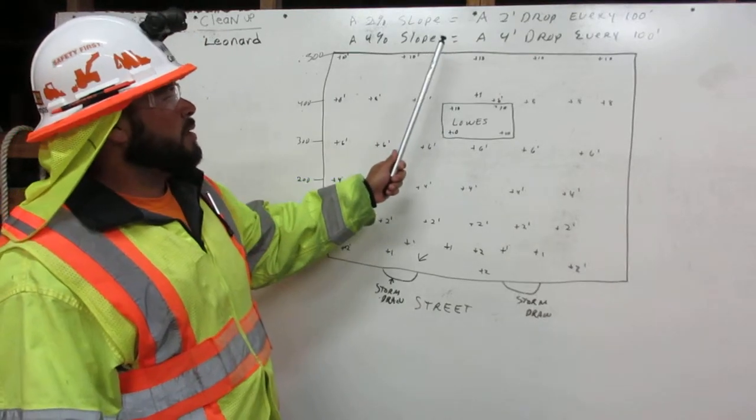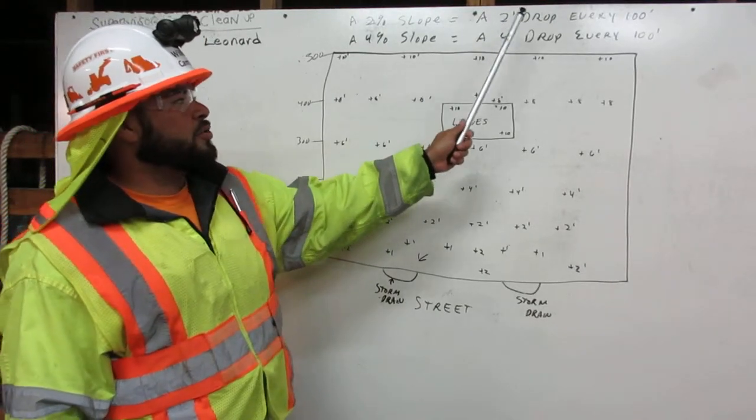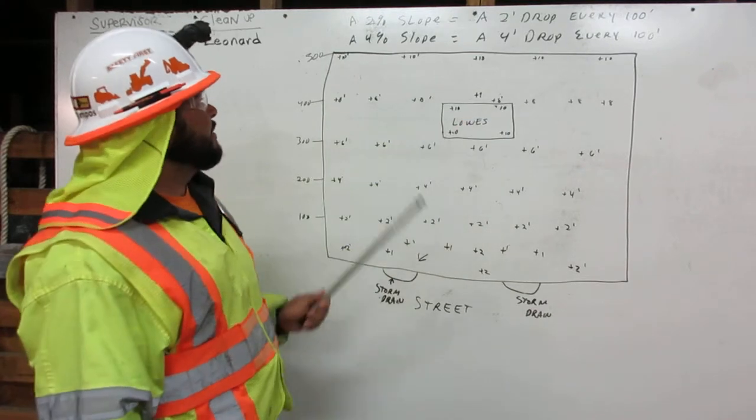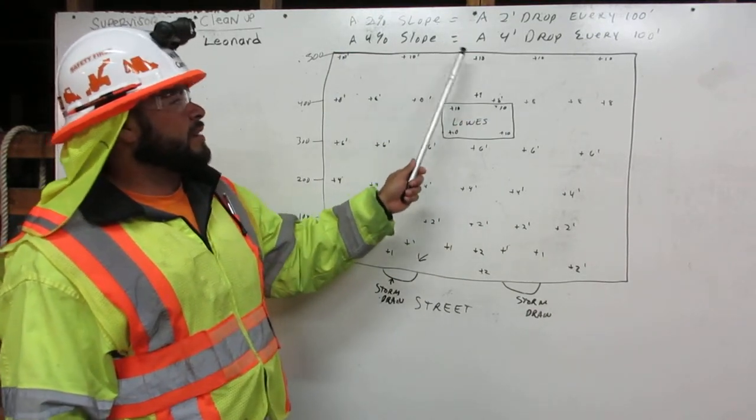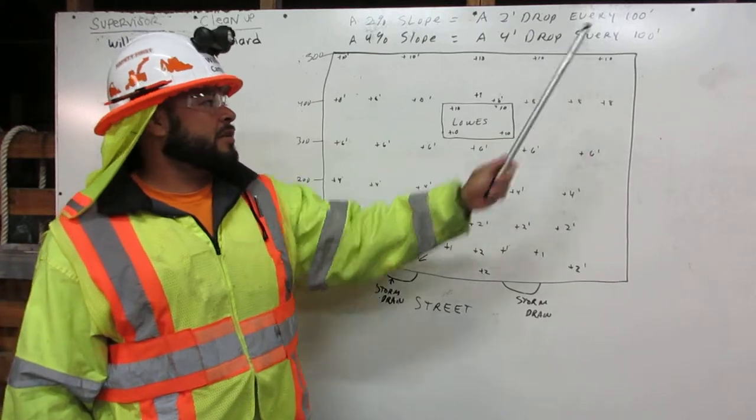A 2% slope means a two-foot drop every 100 feet. A 4% slope means a four-foot drop every 100 feet.